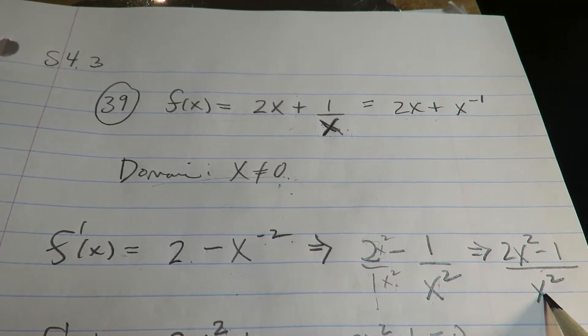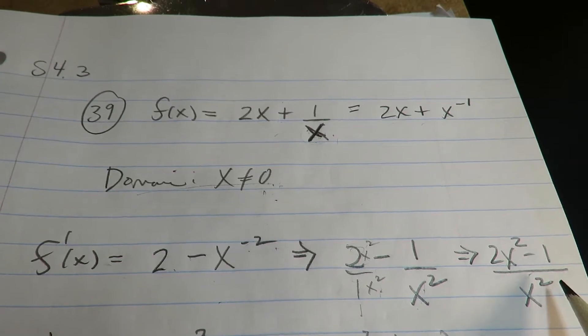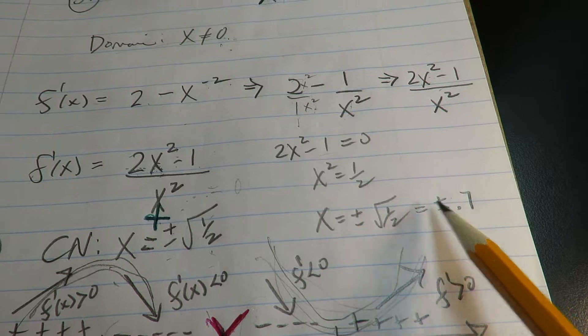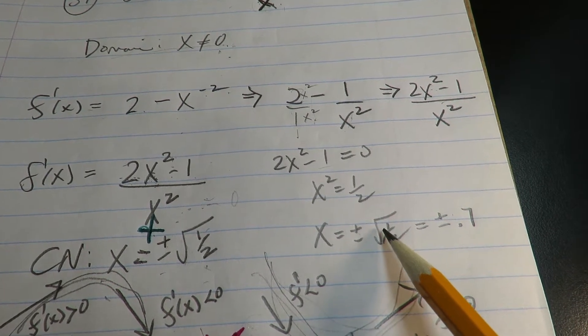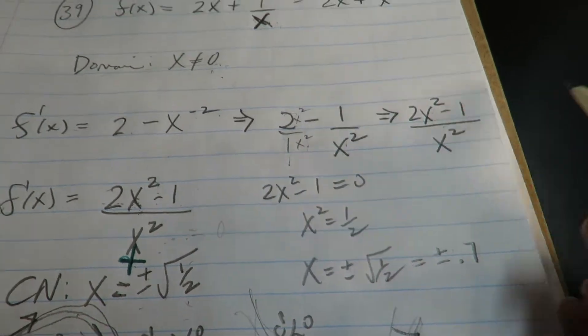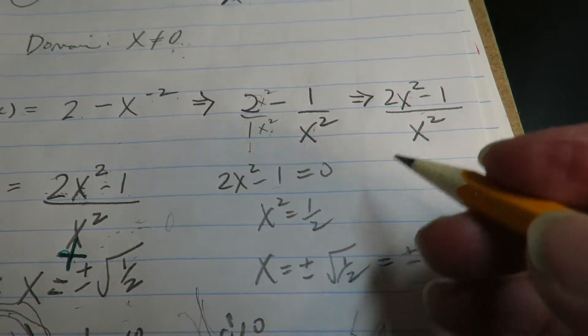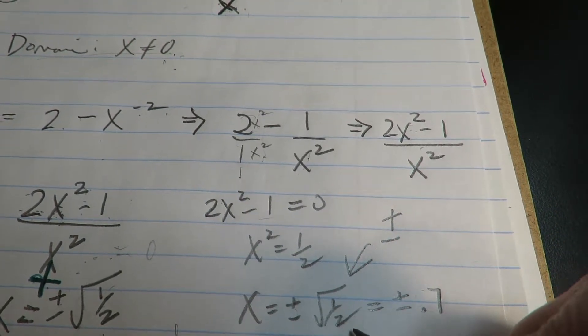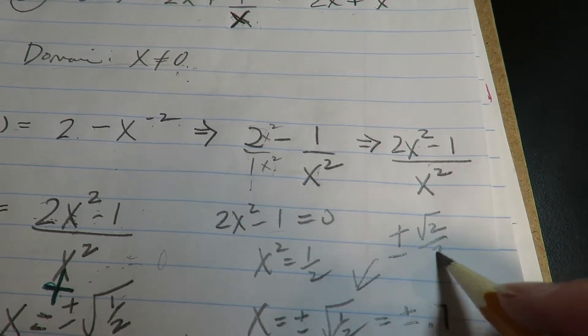After this, I then looked for critical numbers. Now, if you set the numerator equal to zero, you get plus or minus radical one half, which is equivalent to plus or minus 0.7. Now, I didn't rationalize until the very end of this problem. So if you want it rationalized, this would be equivalent to radical two over two.